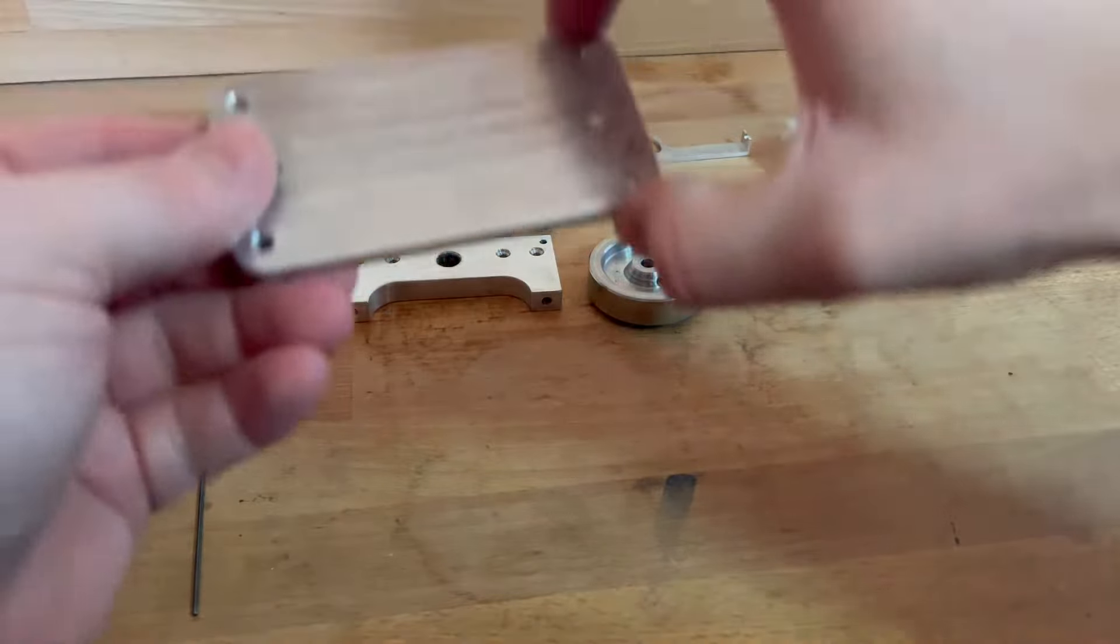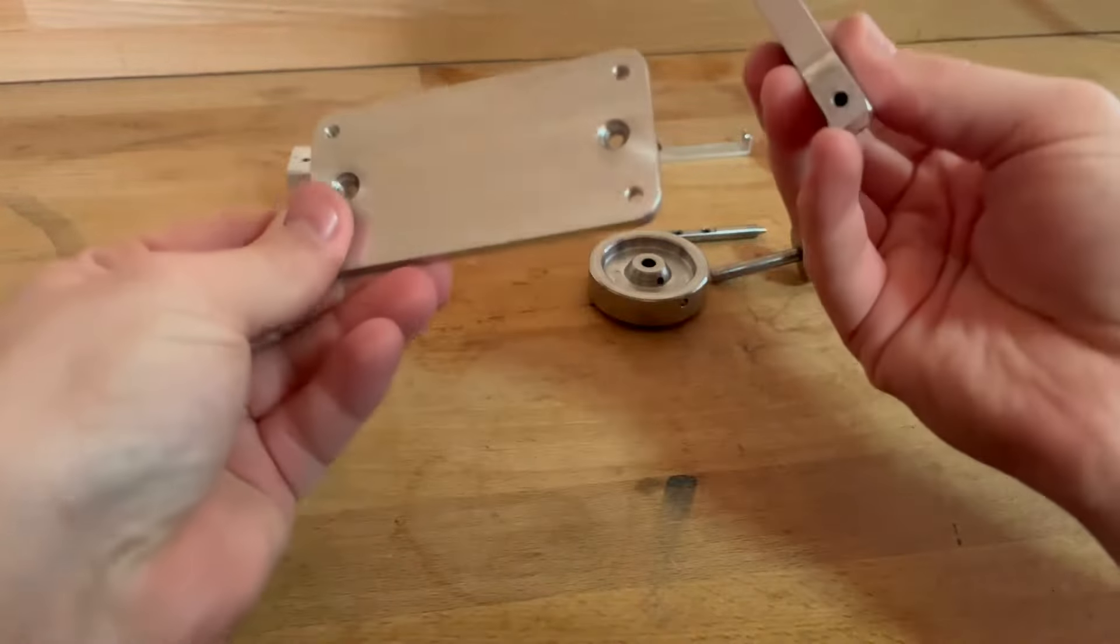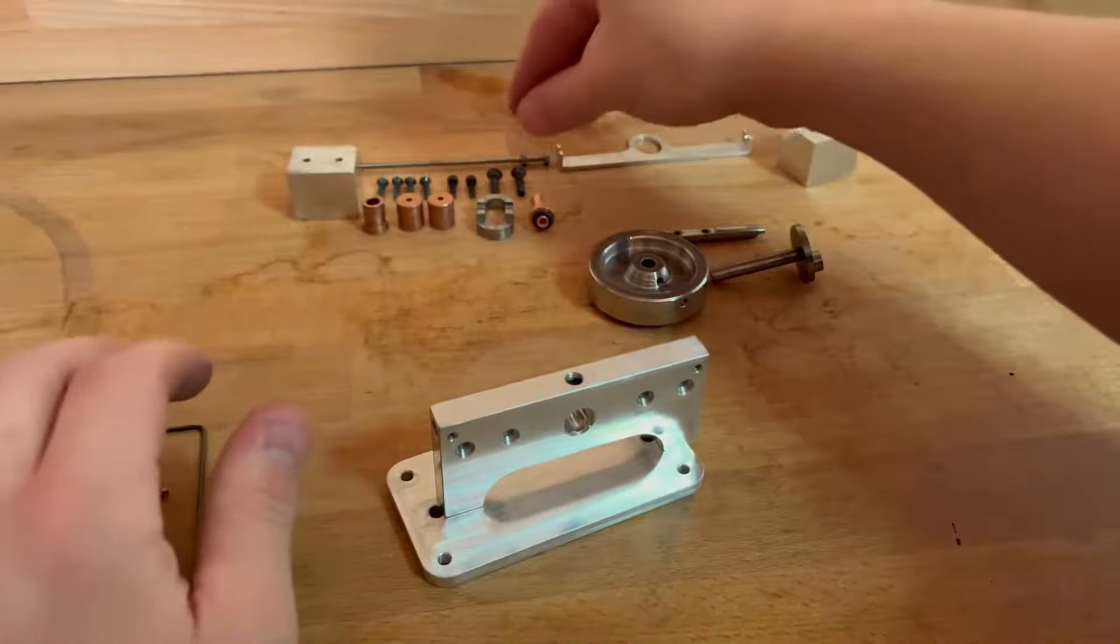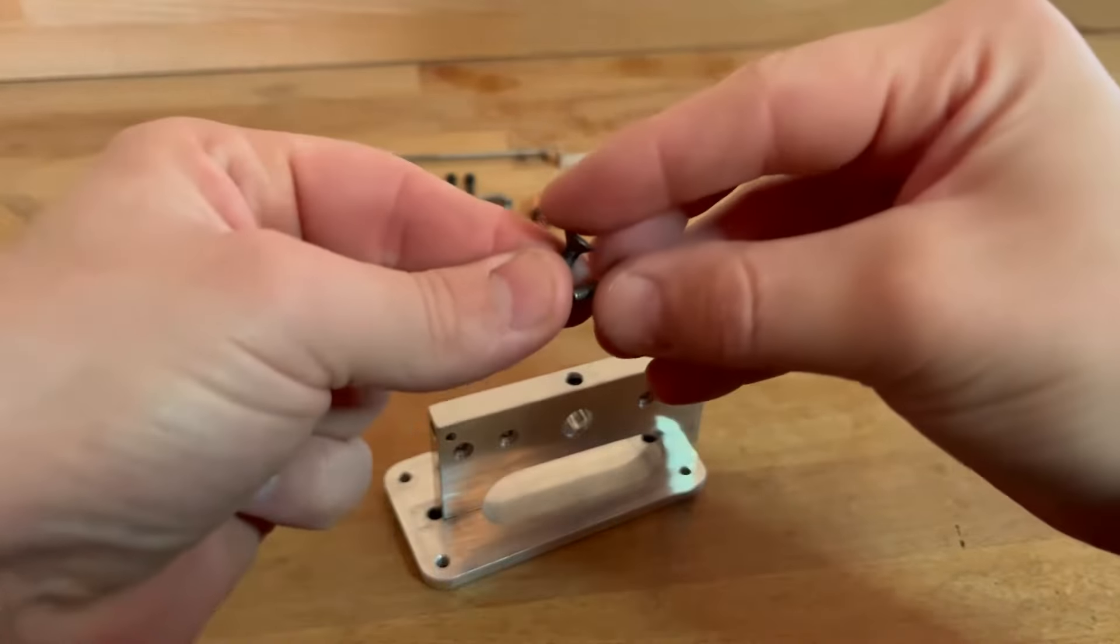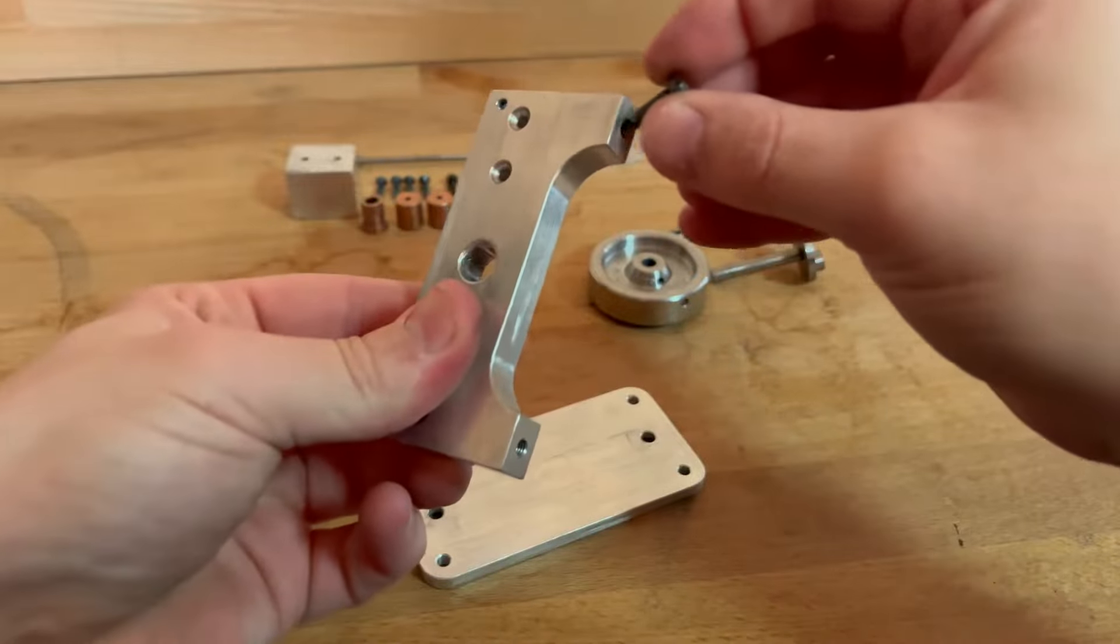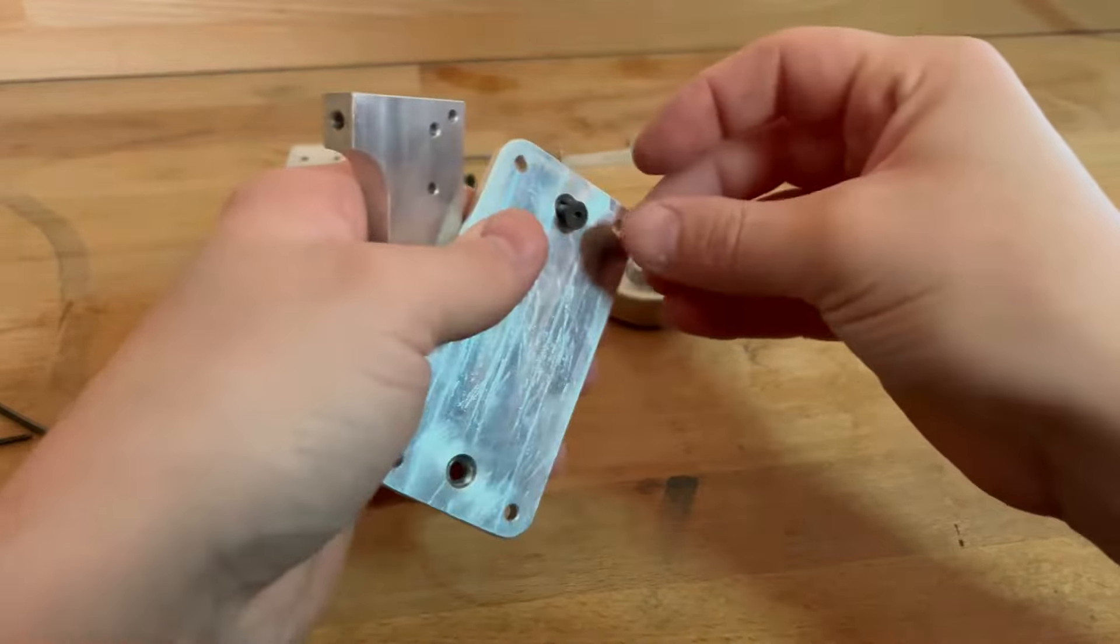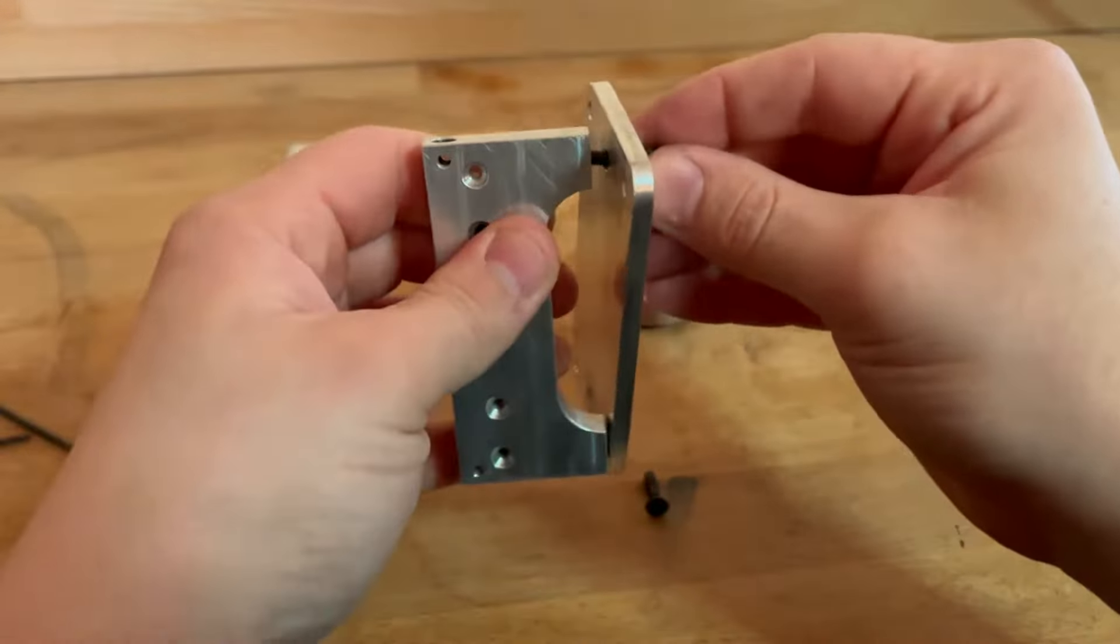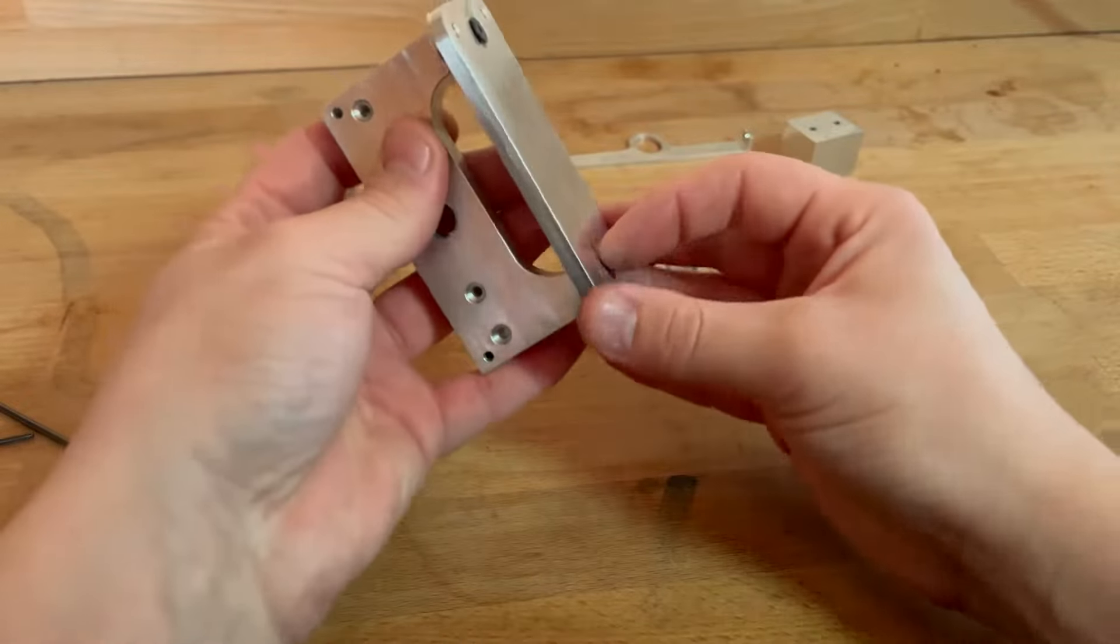First of all, we're going to take the base and put it together with the actual main body. So we need to find the M6 countersink screws, which are here. That will go in here, but underneath. So that goes together like this, and the other one goes in the bottom.